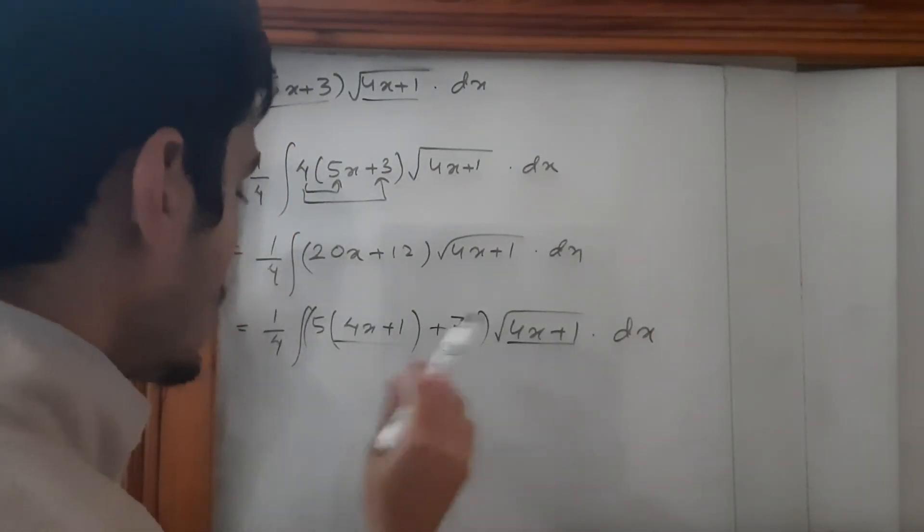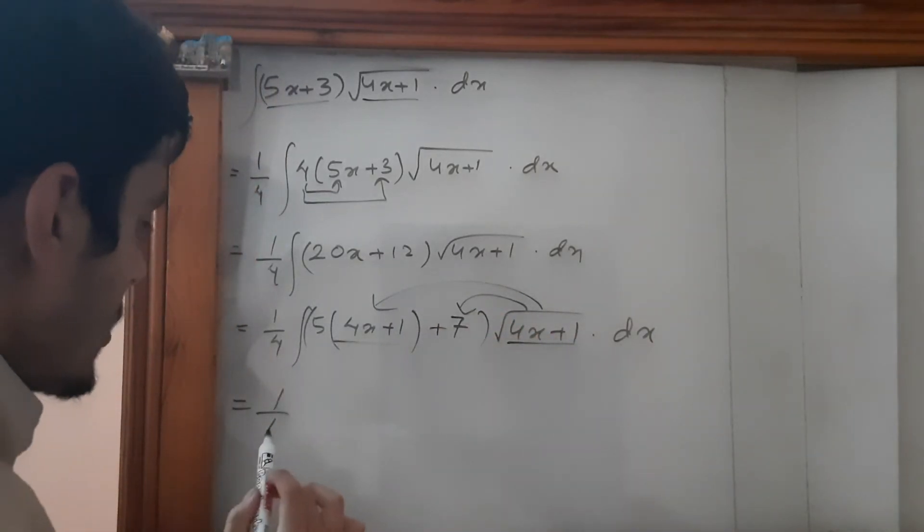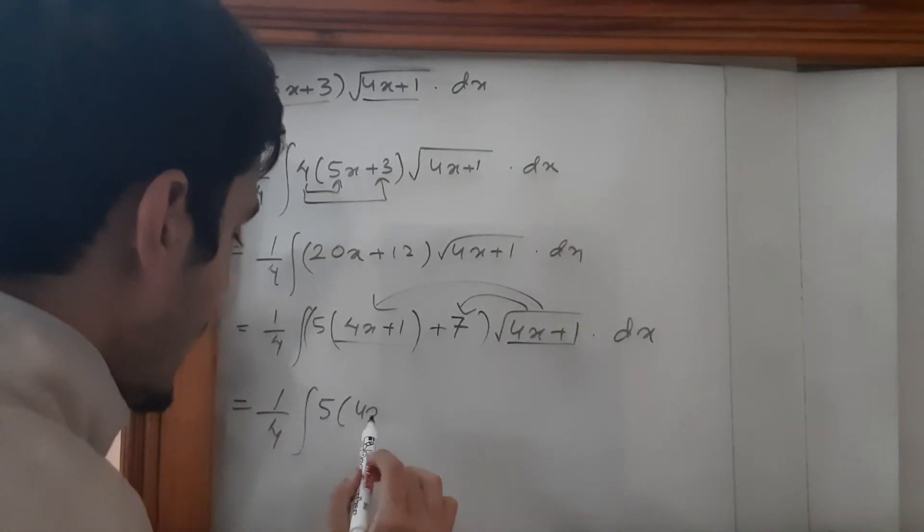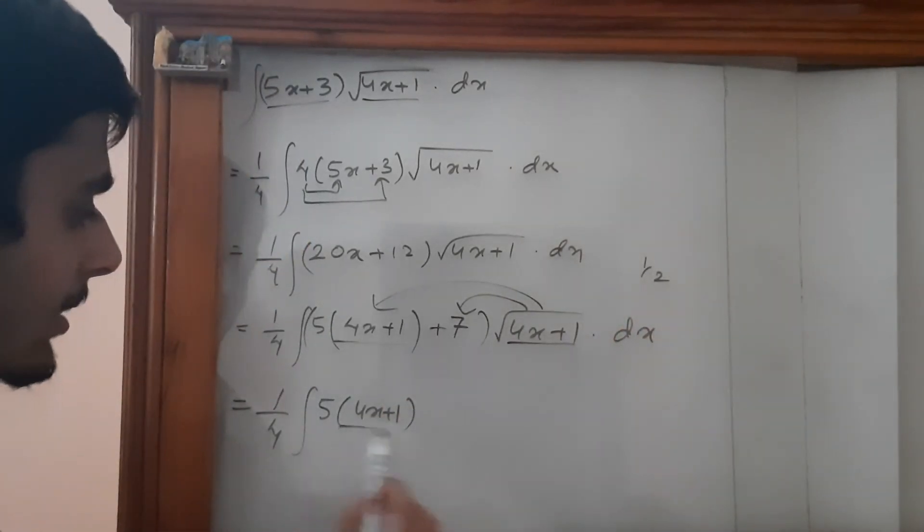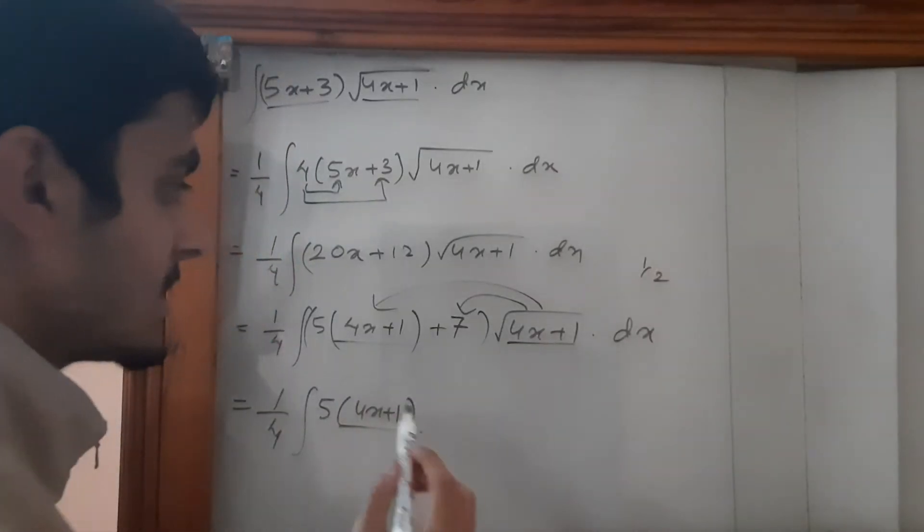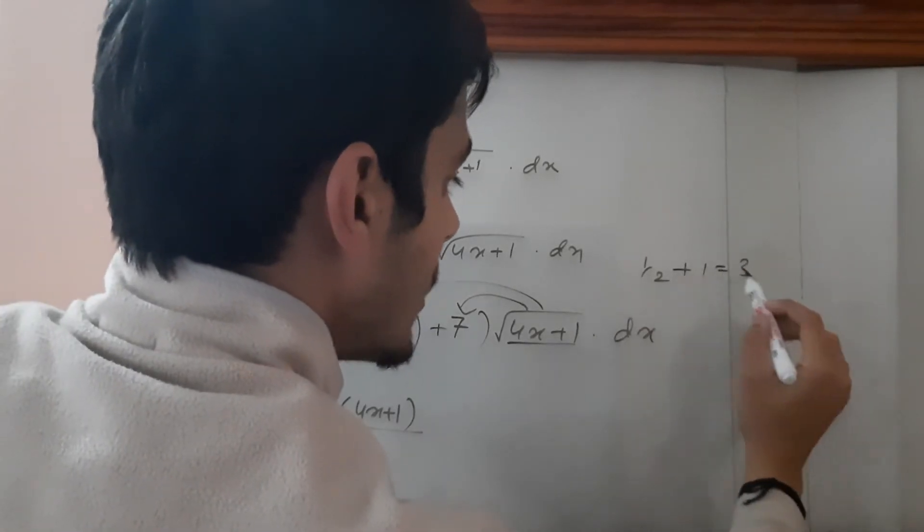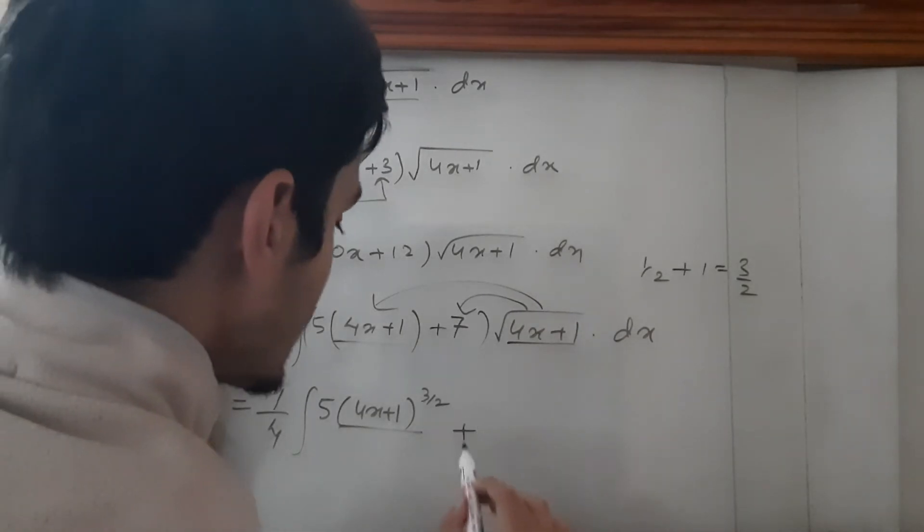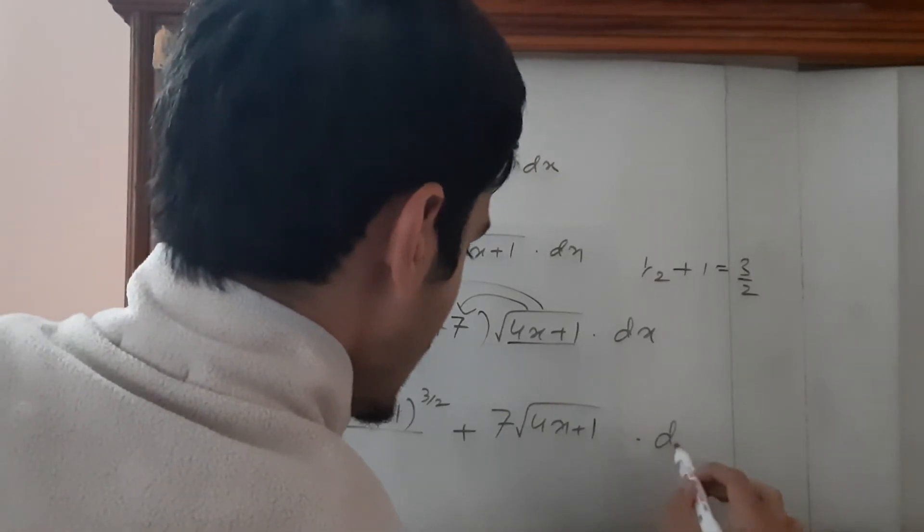Now let's just multiply this with this one. So 1/4 times 5(4x + 1). The power of this is 1/2 and the power of this is 1. The bases are the same, so we can add the powers. So 1/2 + 1 is of course 3/2. We can just do this plus 7 multiplies this, of course dx.